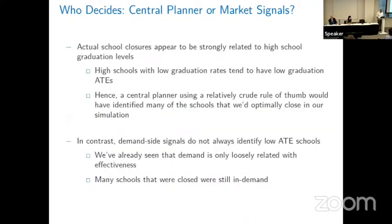The question now is who decides. If I'm advocating for large school closures, do we trust the central planner to do this, or are there market signals inside the assignment process that reveal this information? We've just learned that actual school closures appear to be strongly related to high school graduation levels. A central planner using a crude rule of thumb like New York City did would have identified many of the schools we would optimally close given all our calculations.